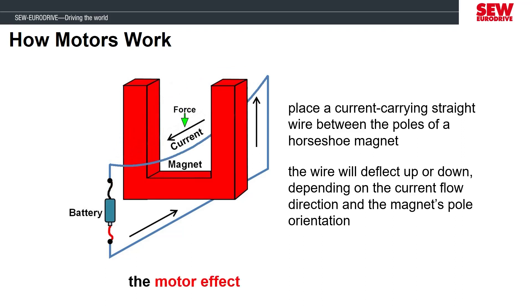This produced movement of the wire is called the motor effect. This is the basis of all electric motors, where we can produce mechanical motion by manipulating the properties of two magnetic fields that intersect with each other.